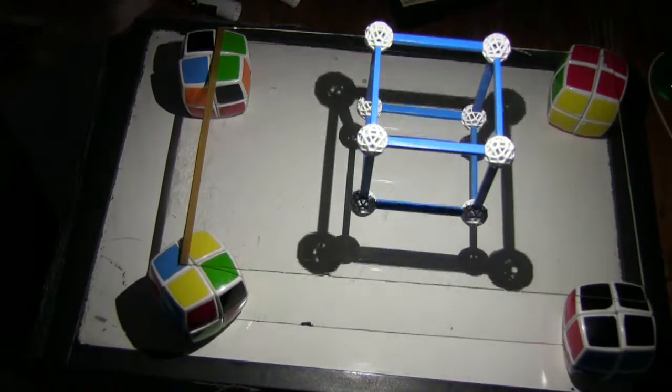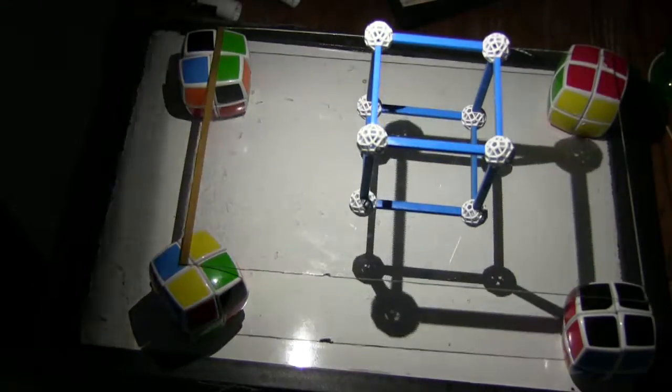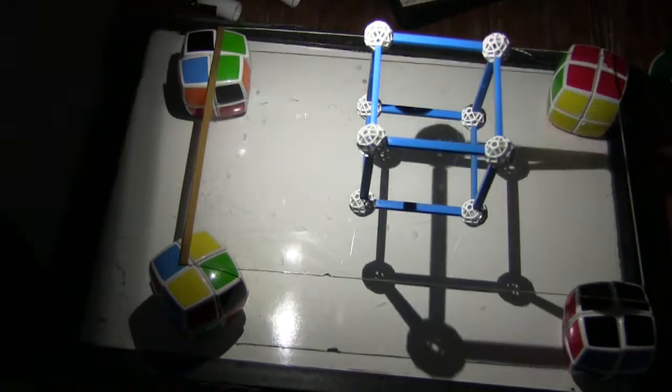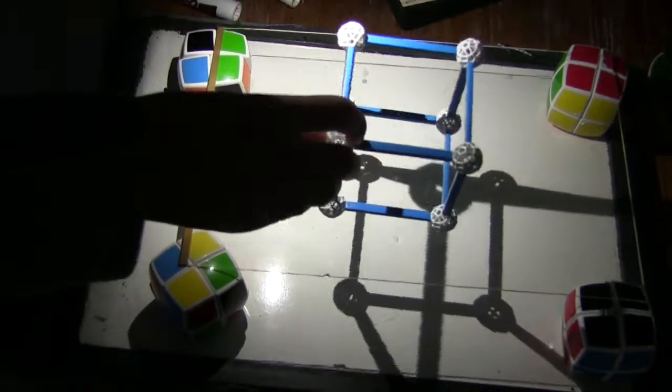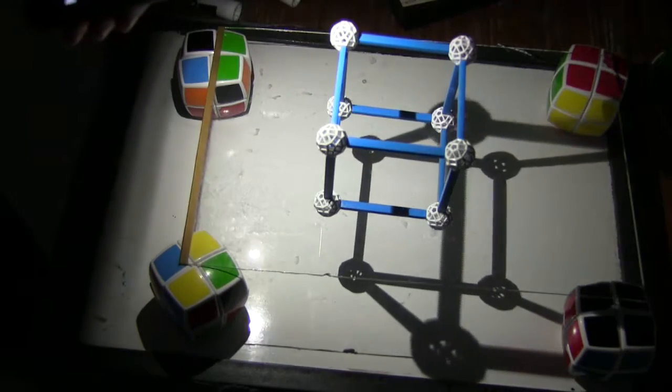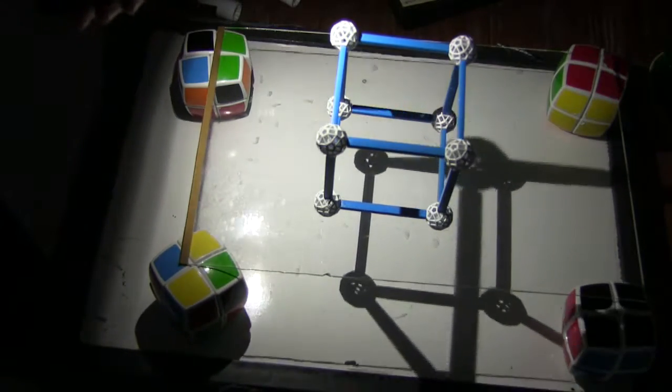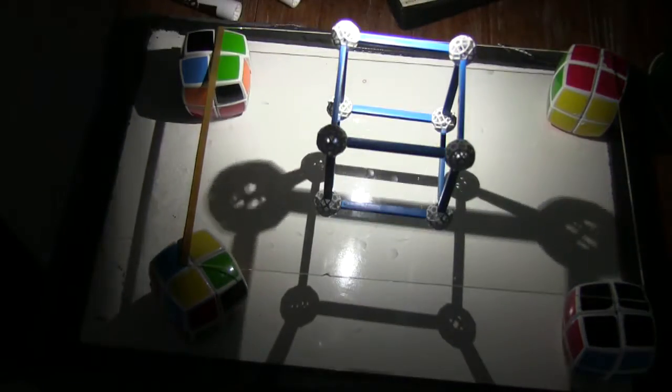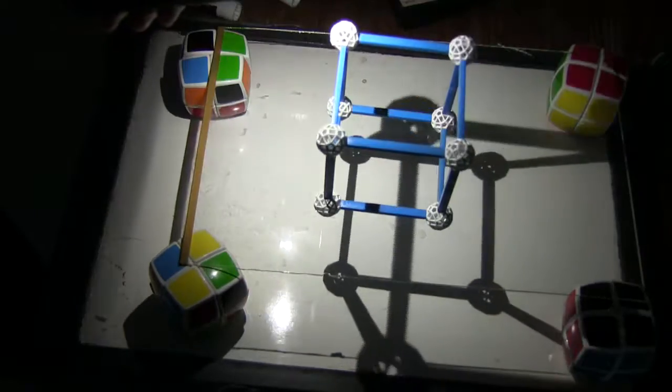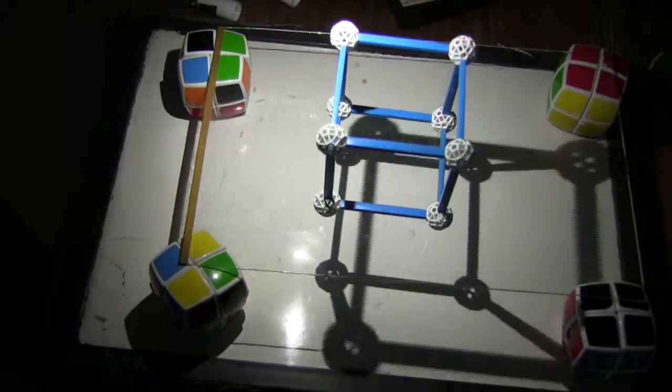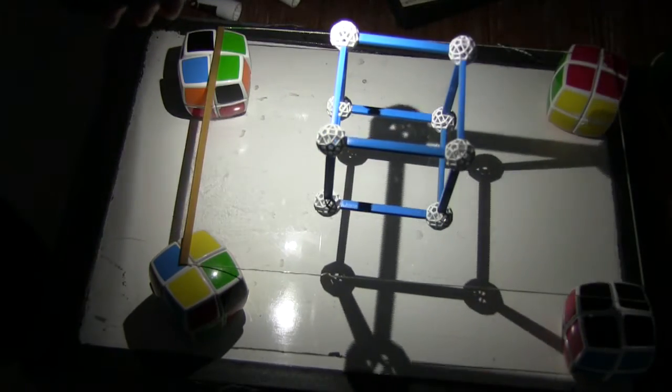So why don't we make some other shadows with the cube here? You can sort of pull it down. Move it over this way. You can get some of the idea. So if you saw some of these shadows, do you think you could tell that this was a cube making this shadow? Not really. This doesn't look much like a cube.